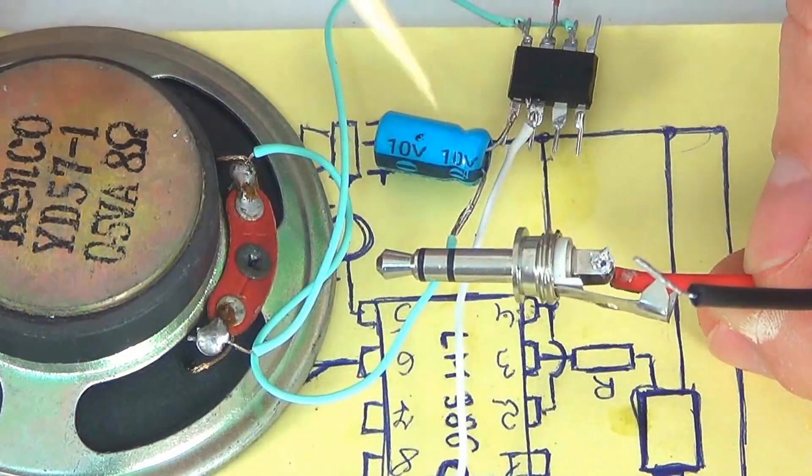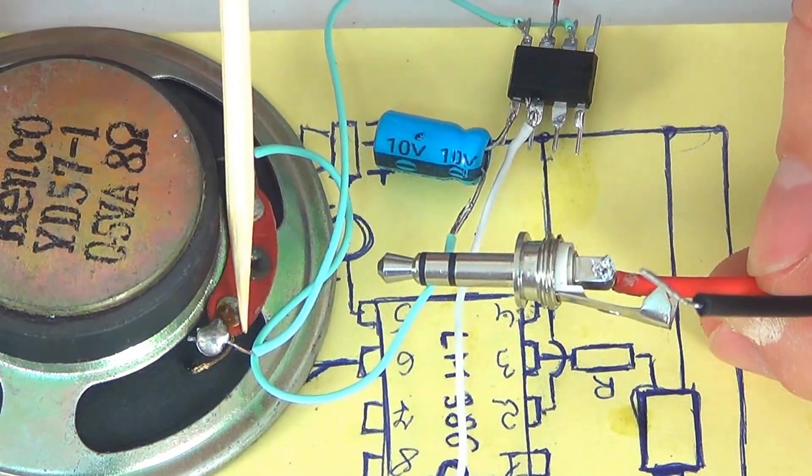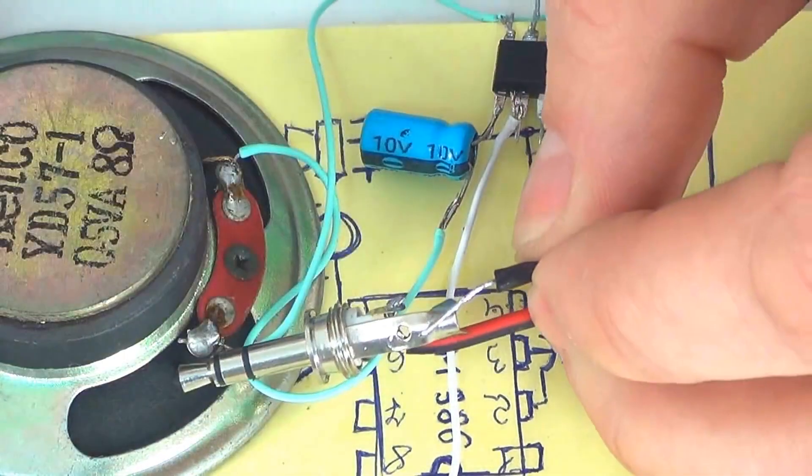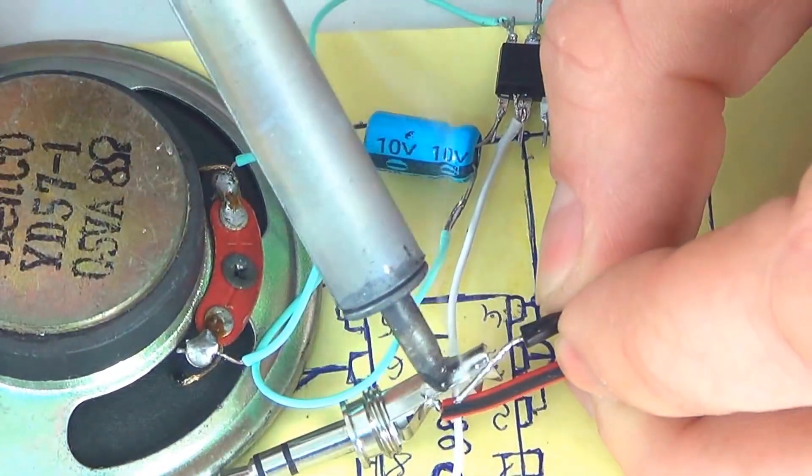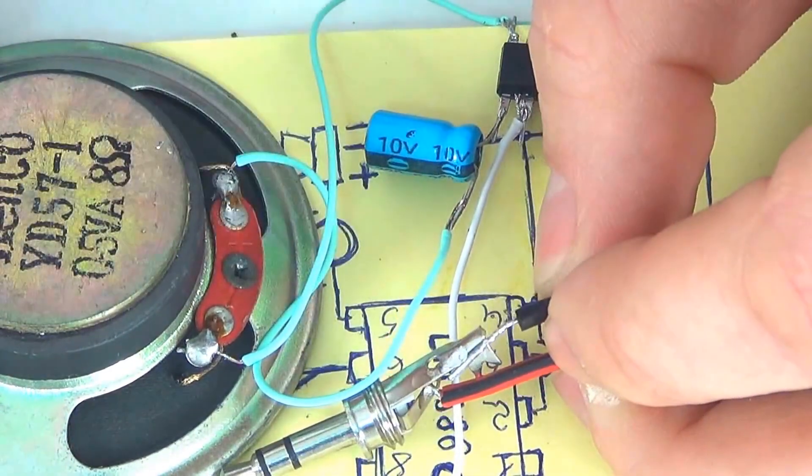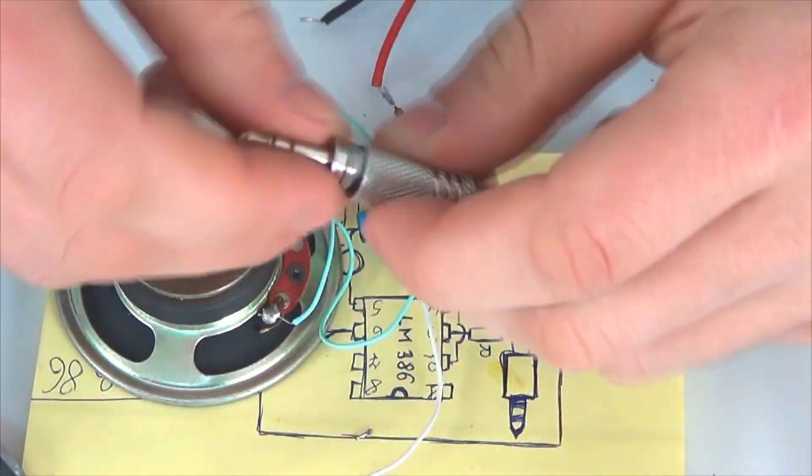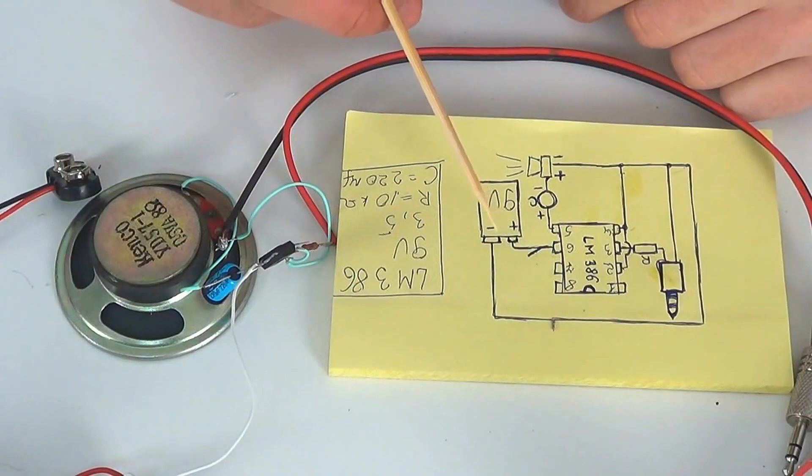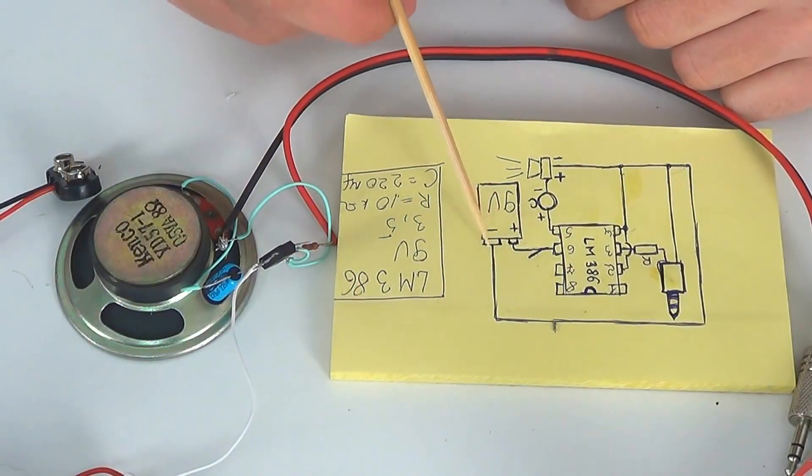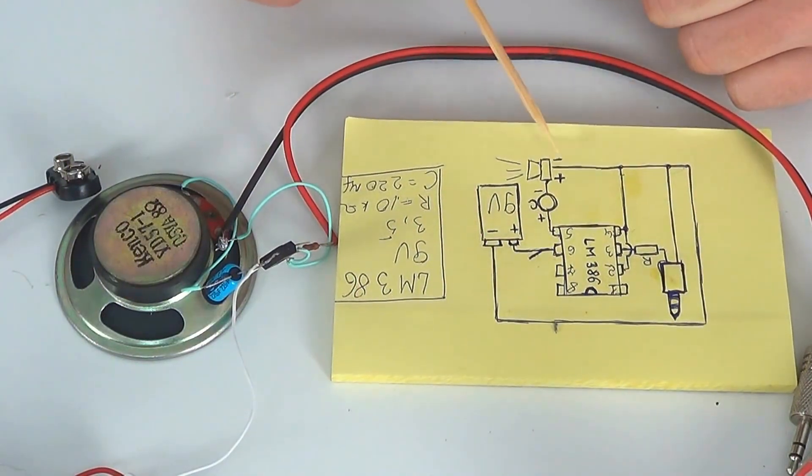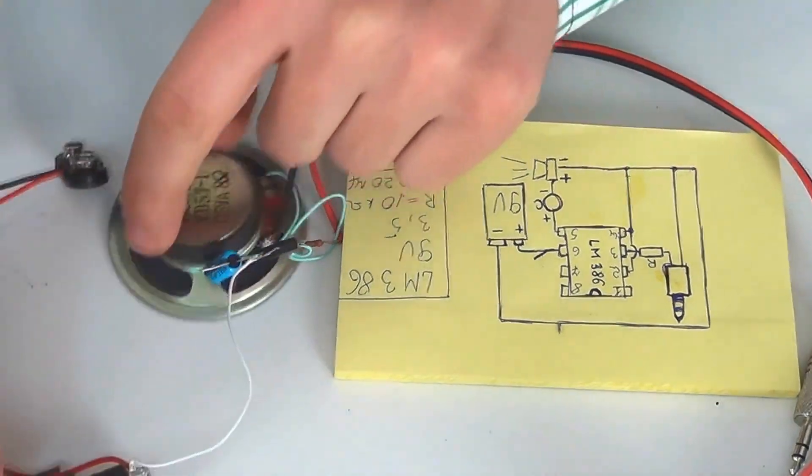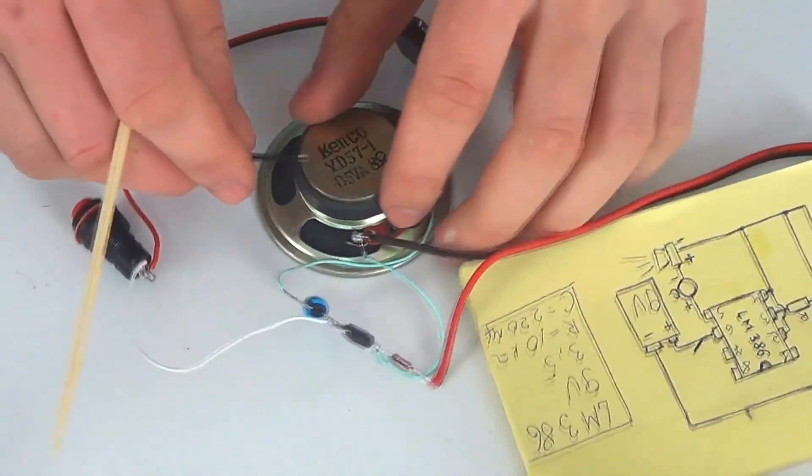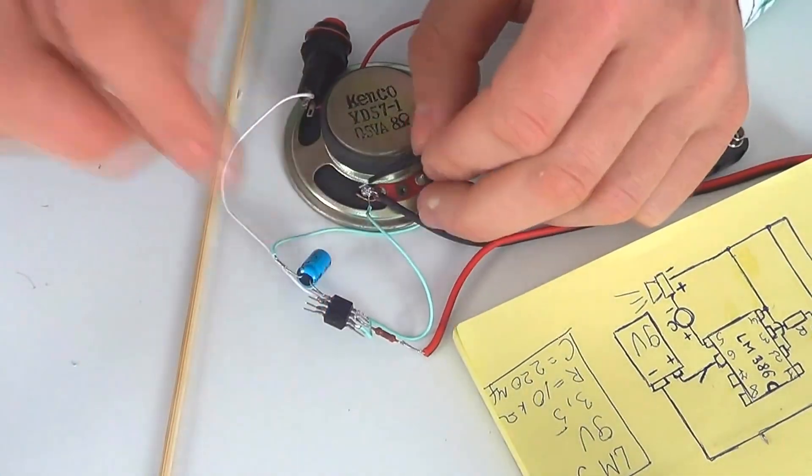The minus of our mini-jack should be soldered to the minus of the speaker. And finally, we just have to solder the minus of the battery connector to the minus of the speaker. So, we take a wire and solder it to the minus of the speaker.